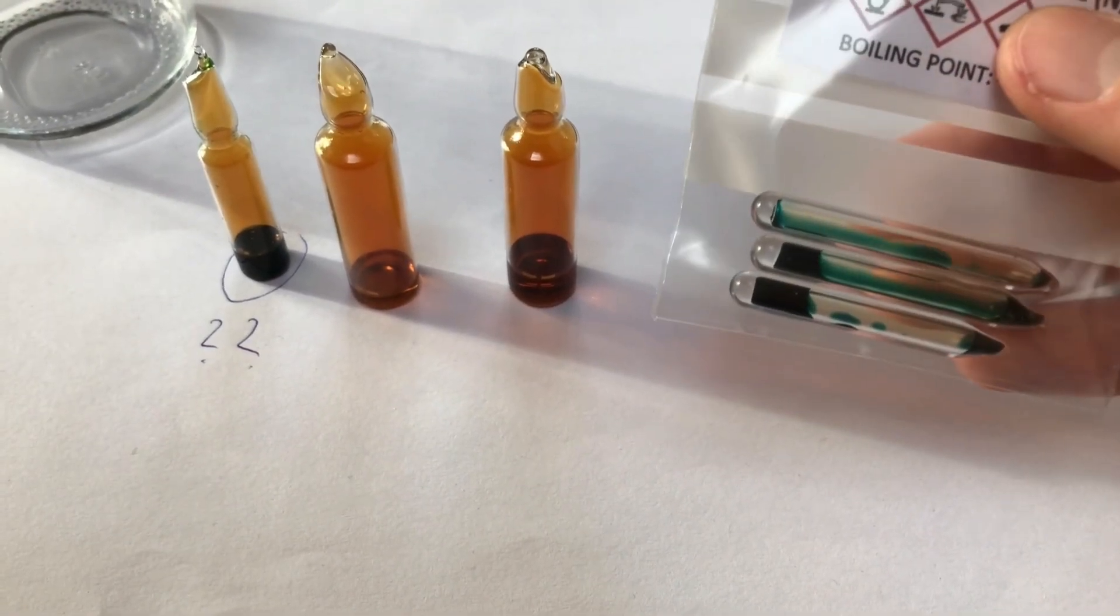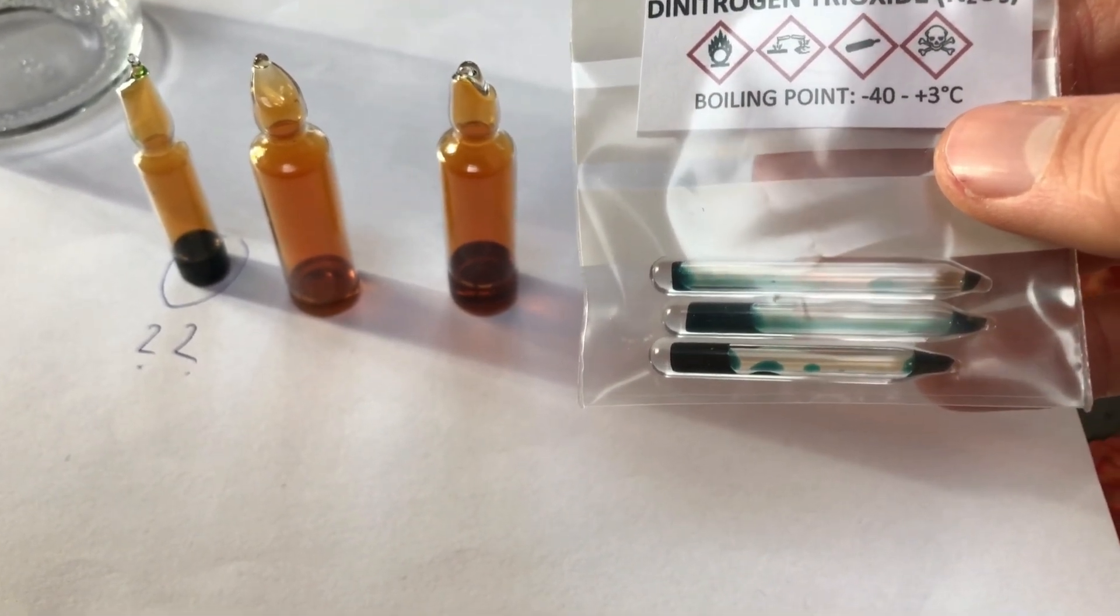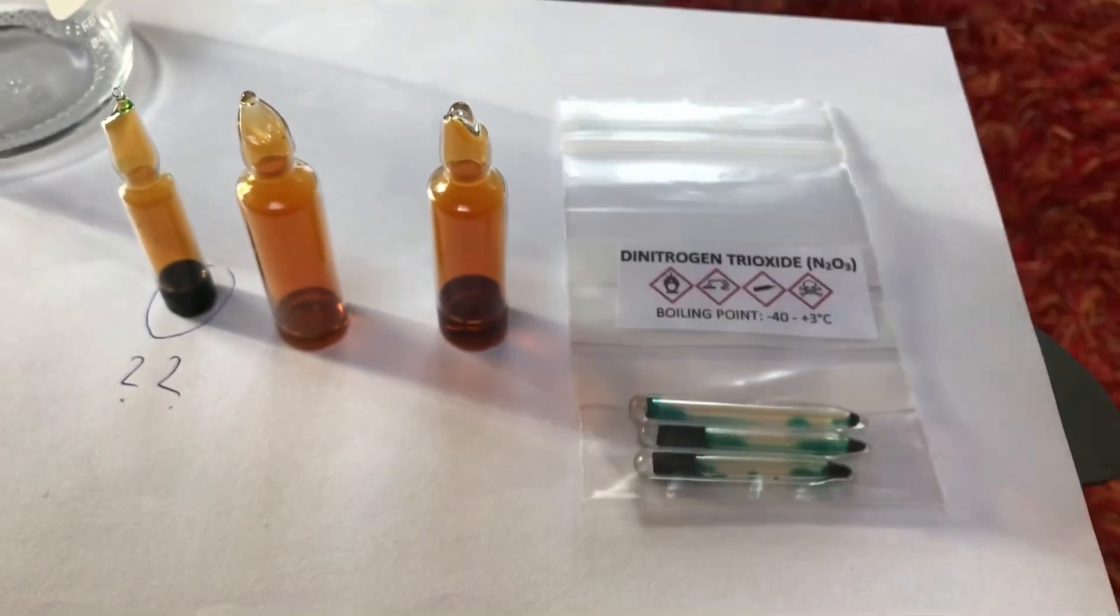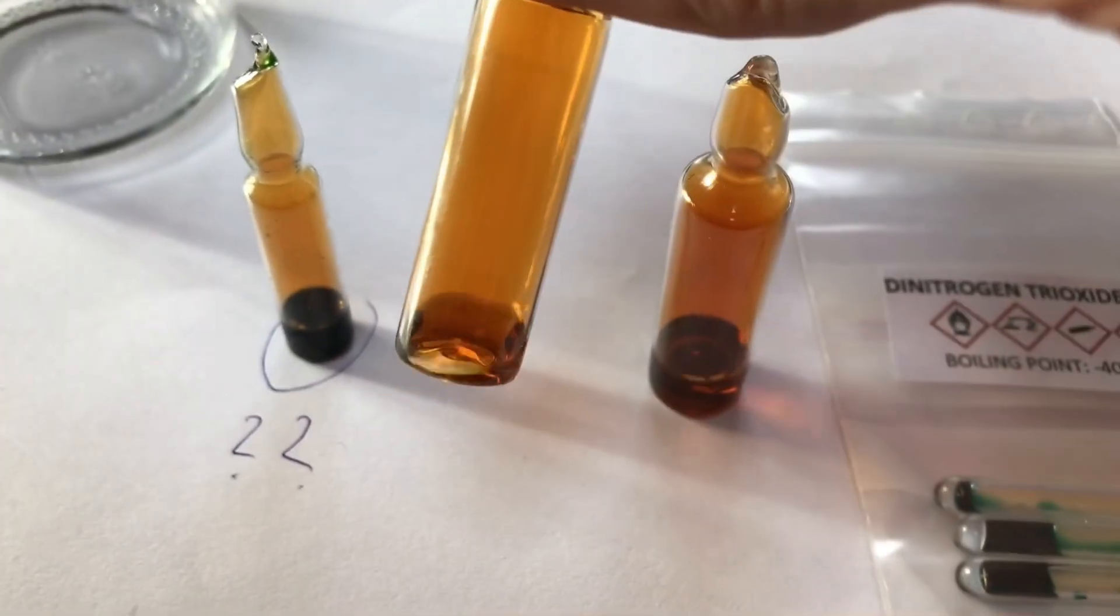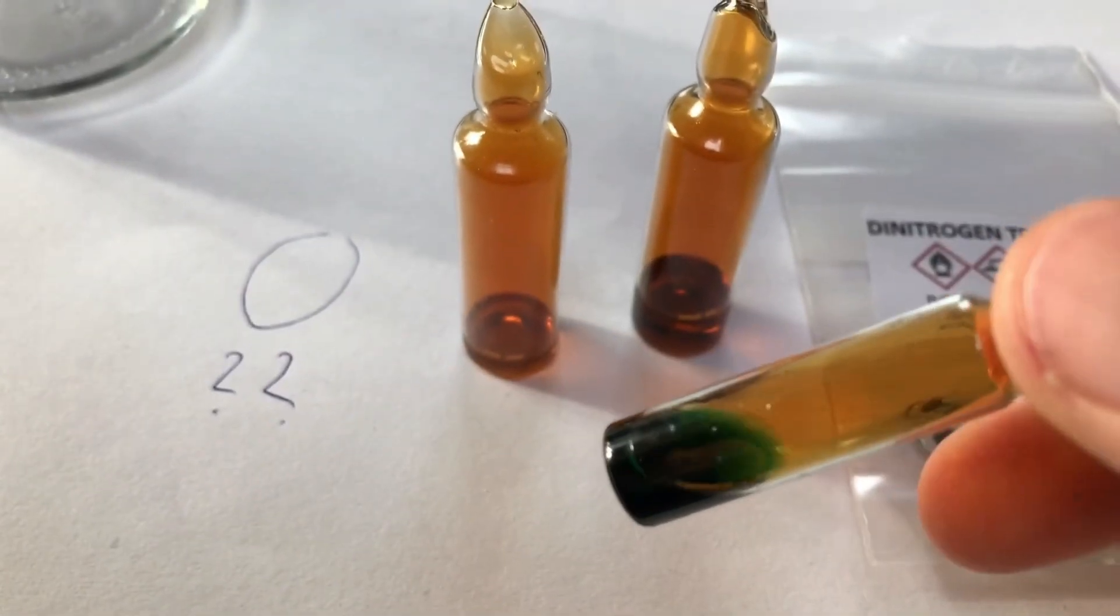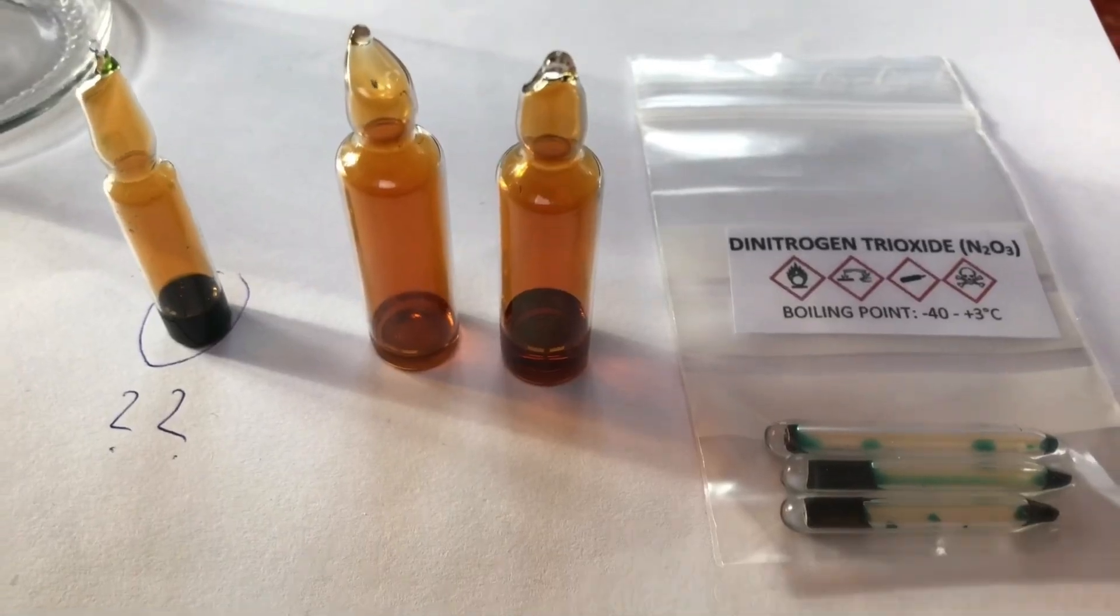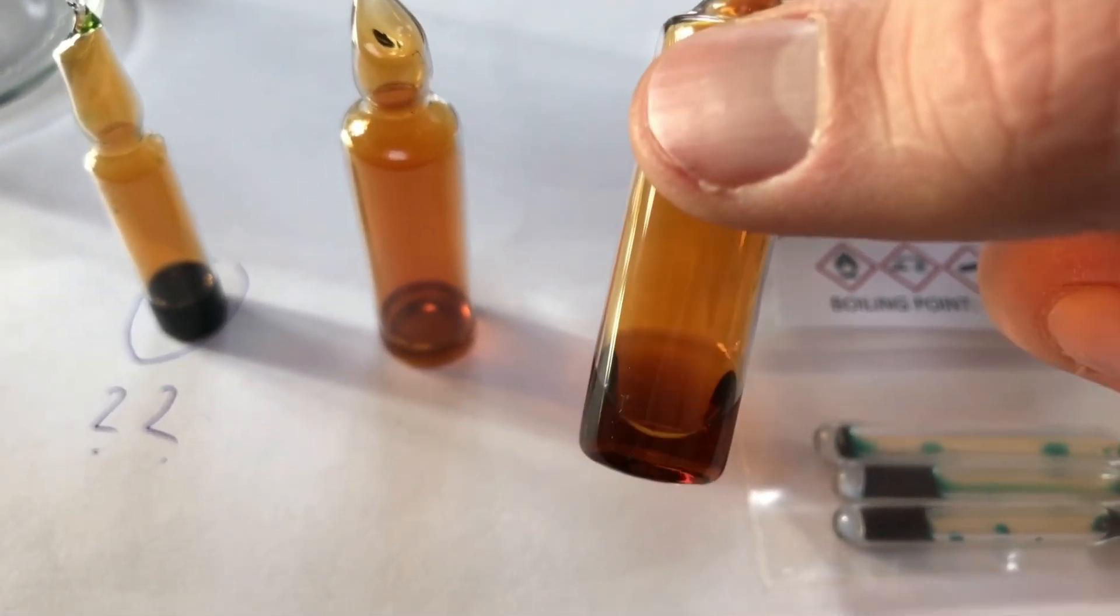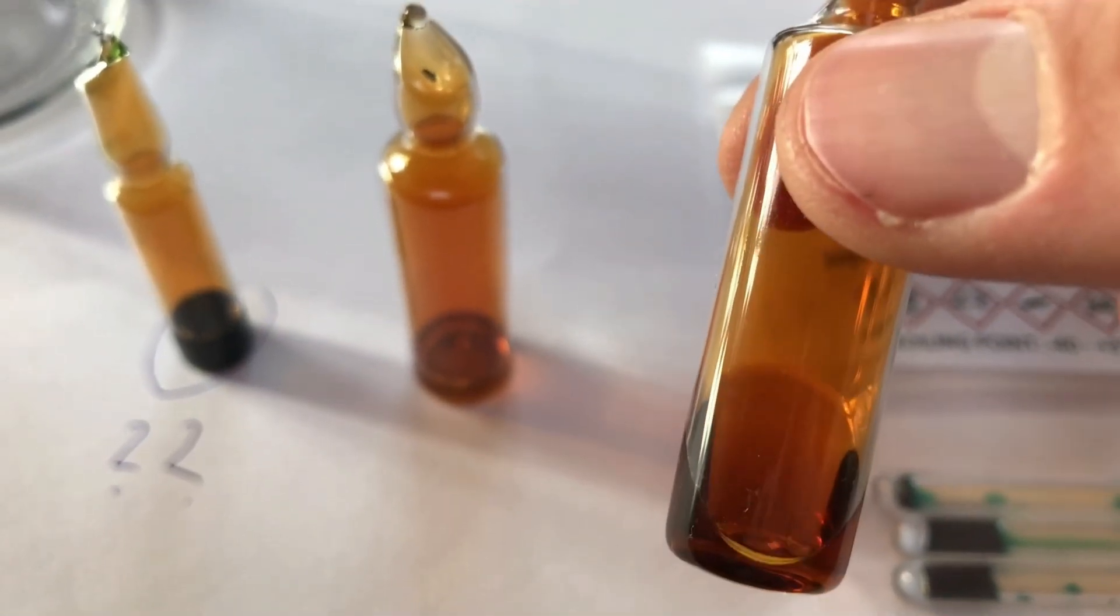This should be approximately 1g of pure anhydrous dinitrogen trioxide, which should not be contaminated with any nitrogen dioxide due to argon purging of the apparatus. We also got 2 ampoules of nitrogen dioxide and 1 ampoule of mixed nitrogen dioxide and nitrogen trioxide. Off screen I've also got an ampoule containing approximately 3 more milliliters of nitrogen dioxide, but I sadly cannot show you that because it's sitting in epoxy and I have to wait for it to cure.